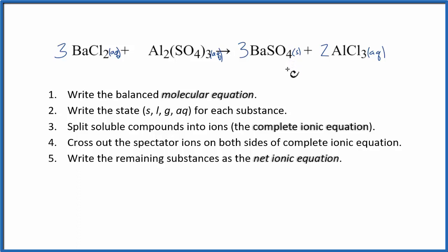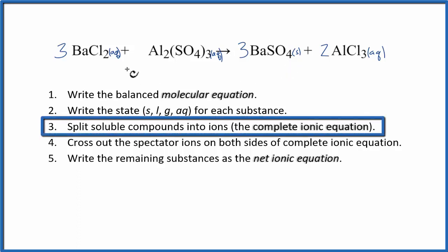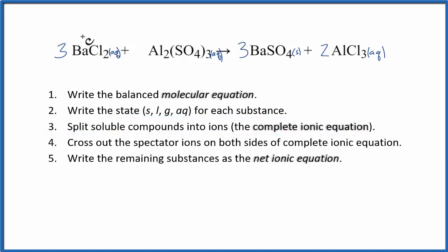Now we've written the states, we can split the soluble compounds, the aqueous compounds, up into their ions. Barium, that's in group two on the periodic table, has a two plus ionic charge. Chlorine is in group 17, sometimes called 7A, and has a minus one charge. Aluminum is plus three and the sulfate ion, that's a polyatomic ion, has a charge of two minus.